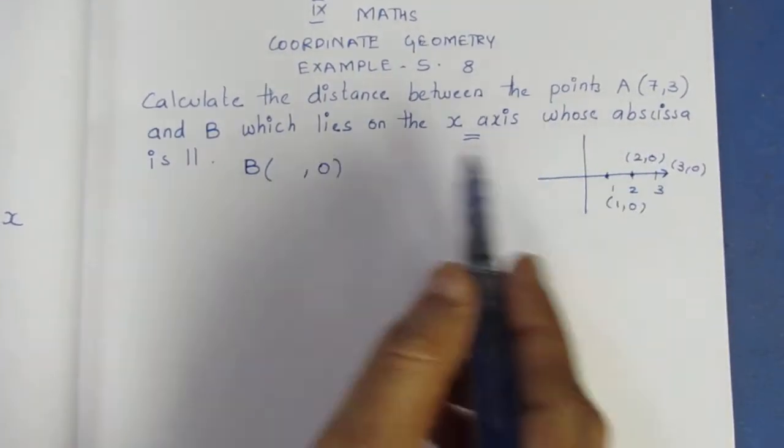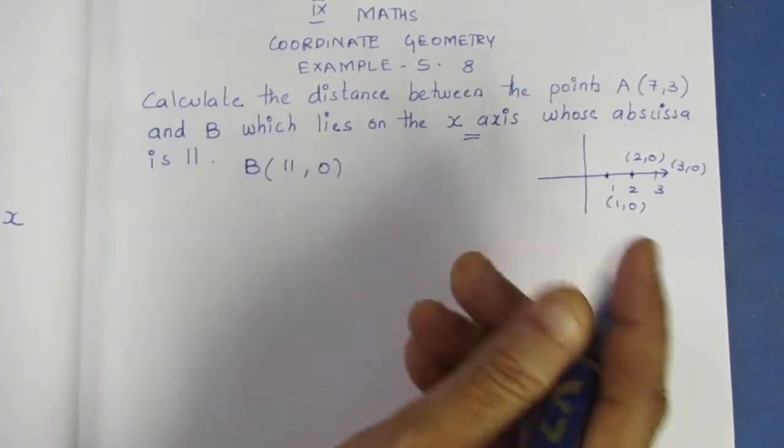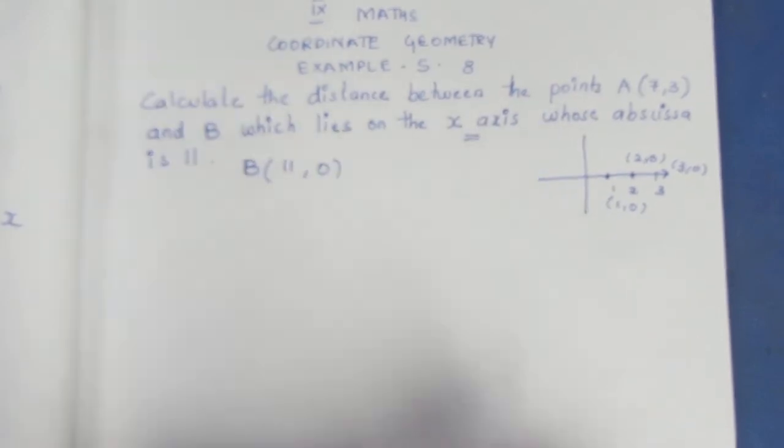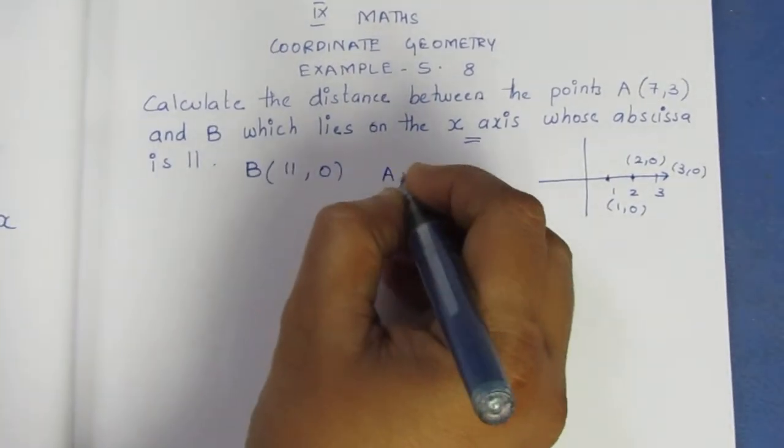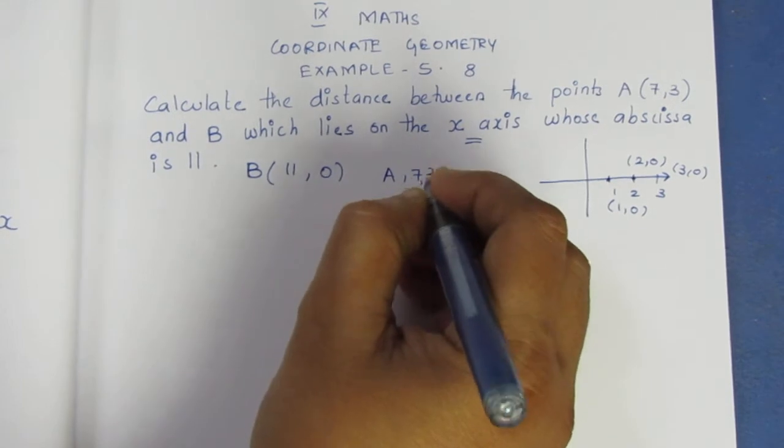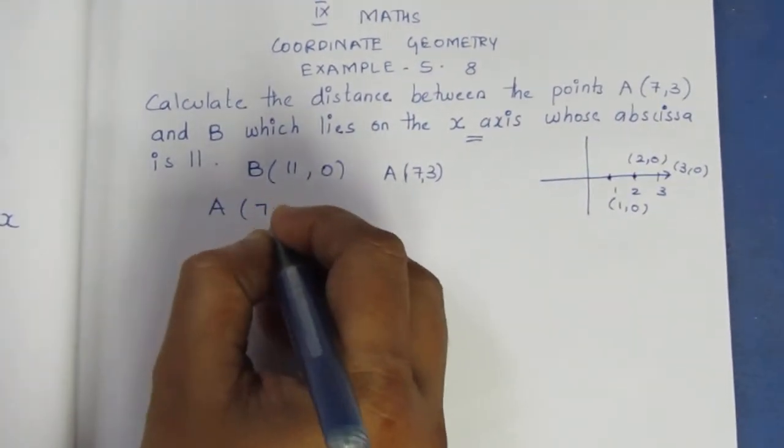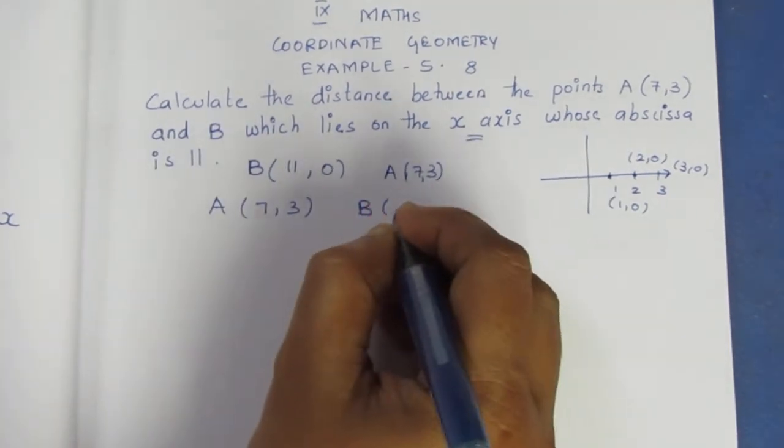Abscissa means x-coordinate value, the x-coordinate value is 11. So, we have to write the coordinates. A is (7,3), B is (11,0).